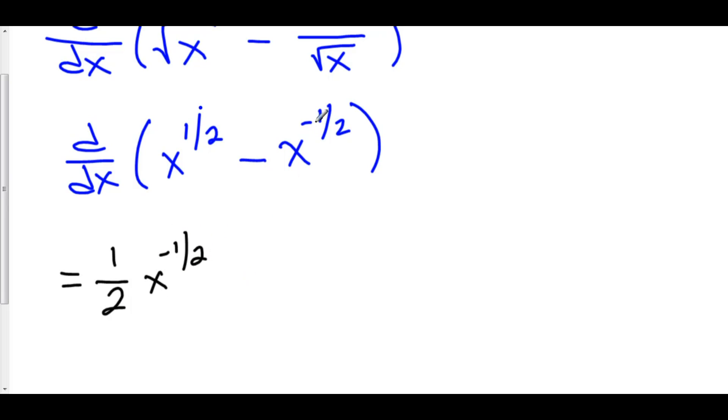Now, minus x to the negative 1 half. We take our negative 1 half, move it in front. Negative 1 times negative 1 half is positive 1 half. We're going to subtract 1 from negative 1 half. Negative 1 half minus 1 is negative 3 halves.